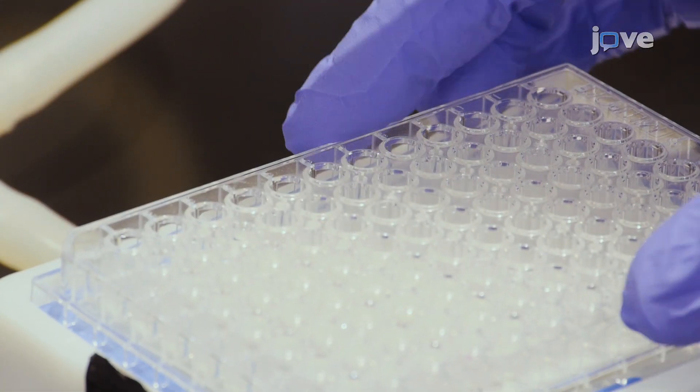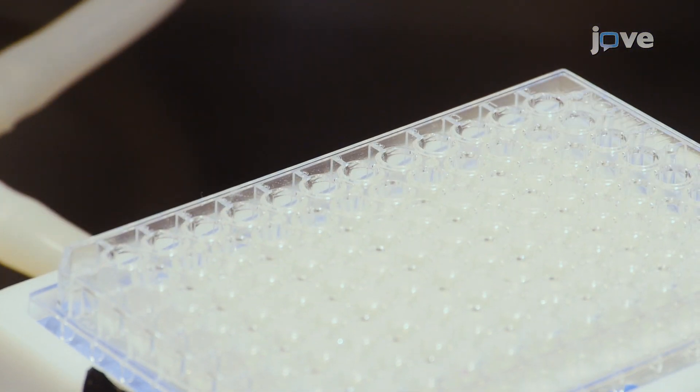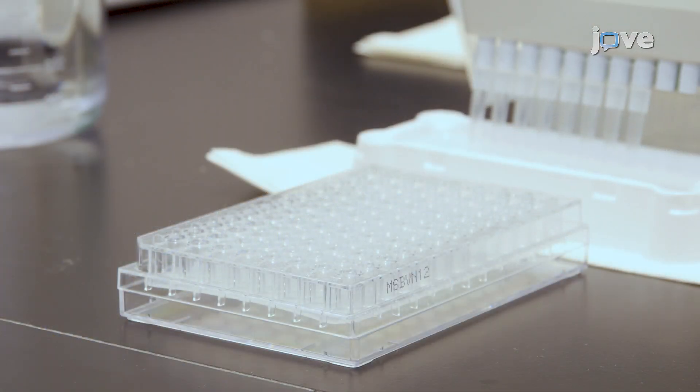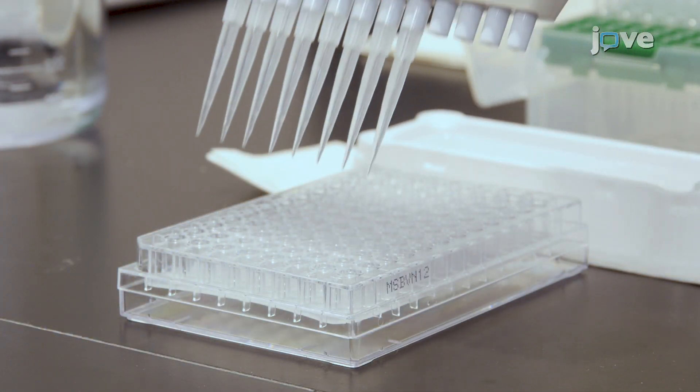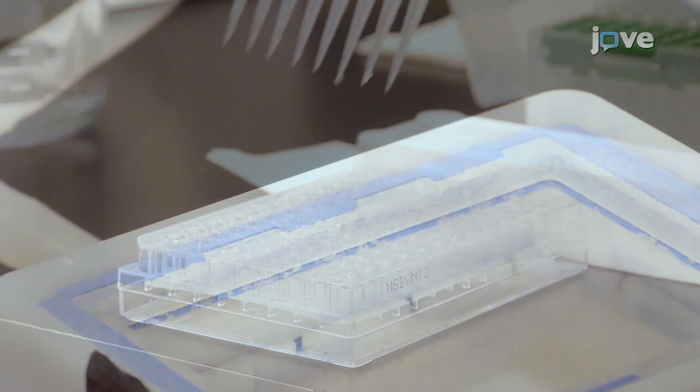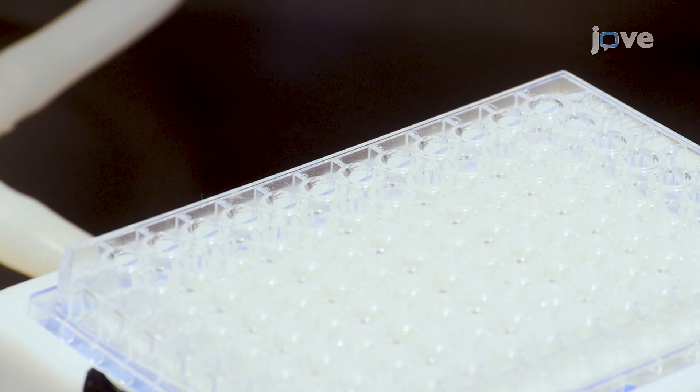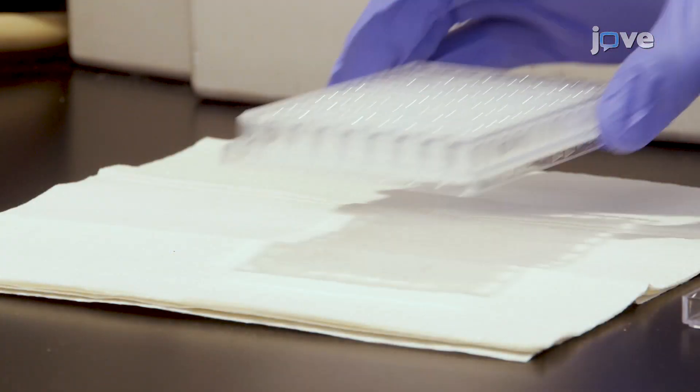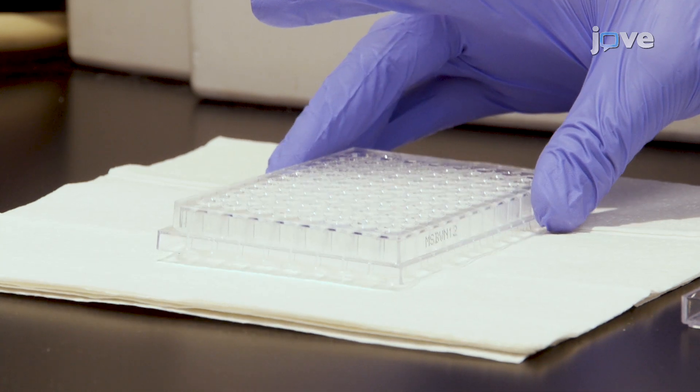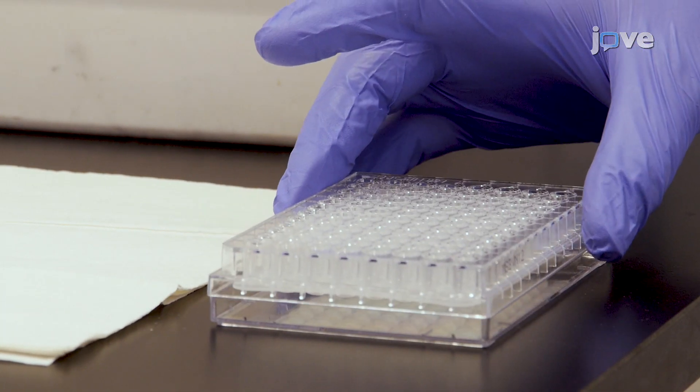Without inverting, place the plate on the vacuum manifold and apply the vacuum as before. Then add 200 microliters of 1x wash buffer to each well. Remove the contents of the assay plate wells by vacuum filtration. Blot excess wash buffer from the bottom of the plate with an absorbent pad or paper towels before repeating this step one more time.